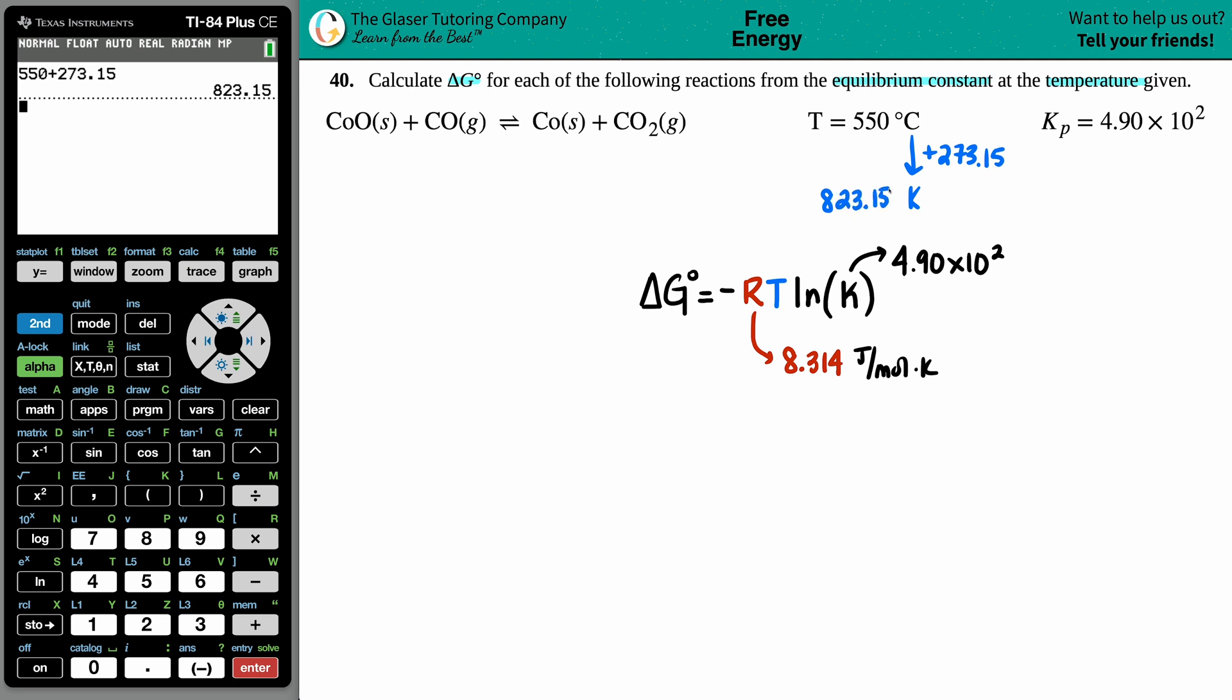That's the number that's going into here. Everything is accounted for, so let's just plug it in. Delta G equals the negative 8.314 times the 823.15.